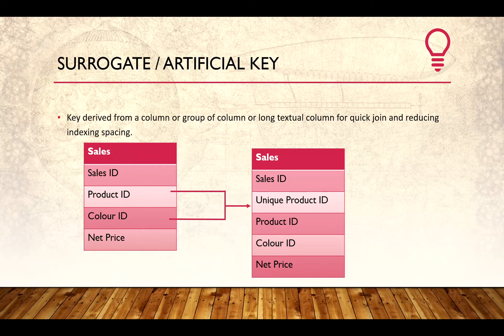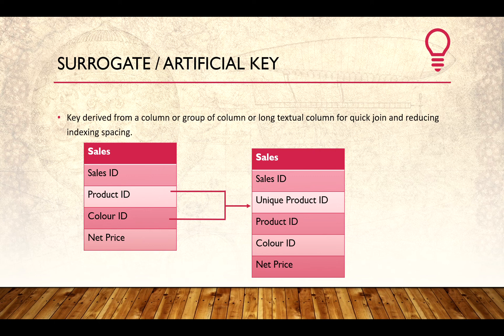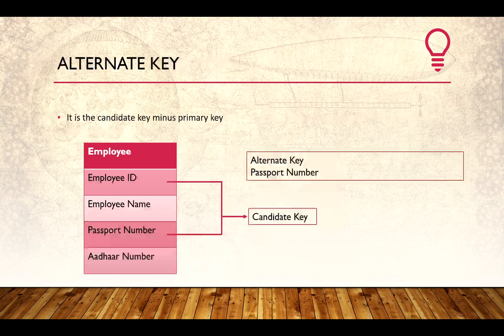For example, in a sales table we have a product ID and color ID, which we might need to join in the future to find the color of a product. Using a composite key would work, but it takes more indexing space and creates a longer join. Instead, we simply combine these two fields into one and give it a unique identifier, so we only need to join on one column, which improves performance.